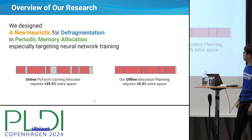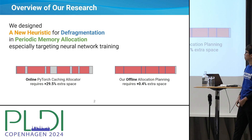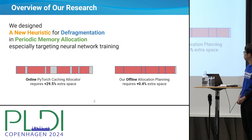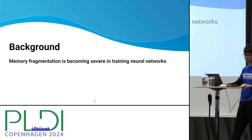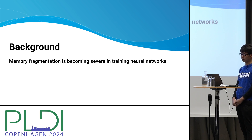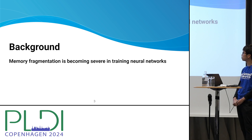Instead of using the online allocation algorithm in the PyTorch allocator, we designed an offline allocator which can utilize memory more efficiently, with just 0.4% fragmentation. I'd like to introduce the background first, and why memory fragmentation is becoming more severe in training neural networks.